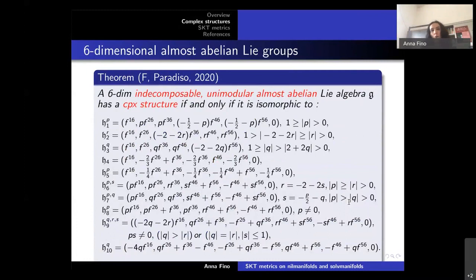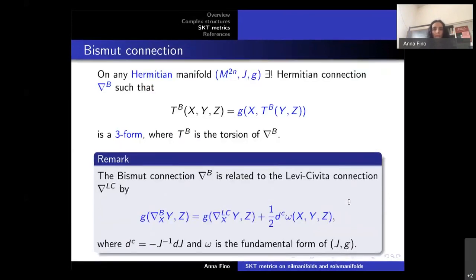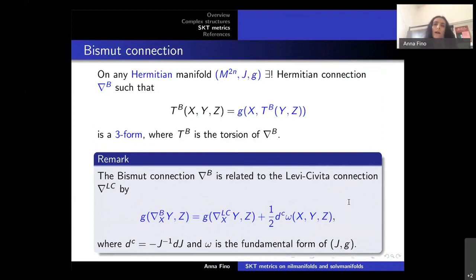We also obtain the classification in the non-unimodular case, giving a further list of algebras. Now that we have results about complex structures, let's do some geometry on these manifolds. I will define what it means for an hermitian metric to be SKT (strong Kähler with torsion) or pluriclosed on a complex manifold.